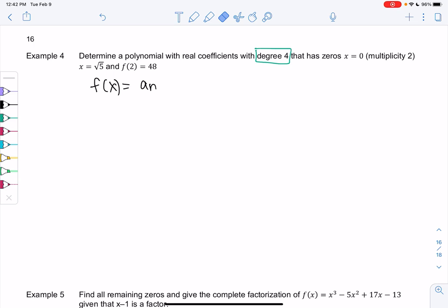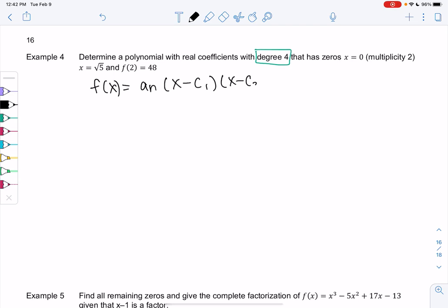We'll have some function f of x with some constant out front, which we'll come back to in a second. We'll call that a_n. And then degree 4 means we have four zeros. They may not be real - they may be imaginary - but we have four factors: x minus c₁, x minus c₂, x minus c₃, and x minus c₄.